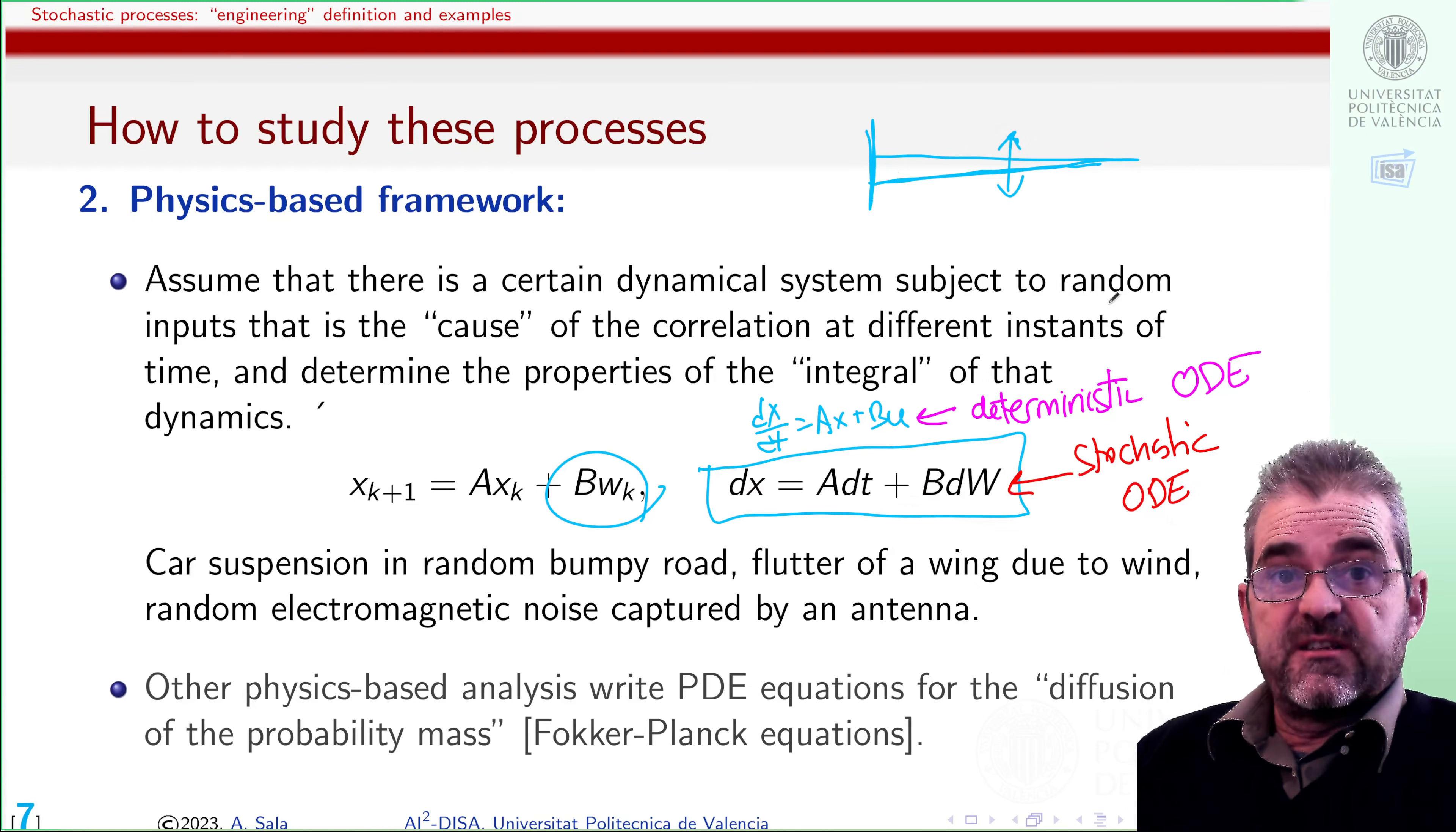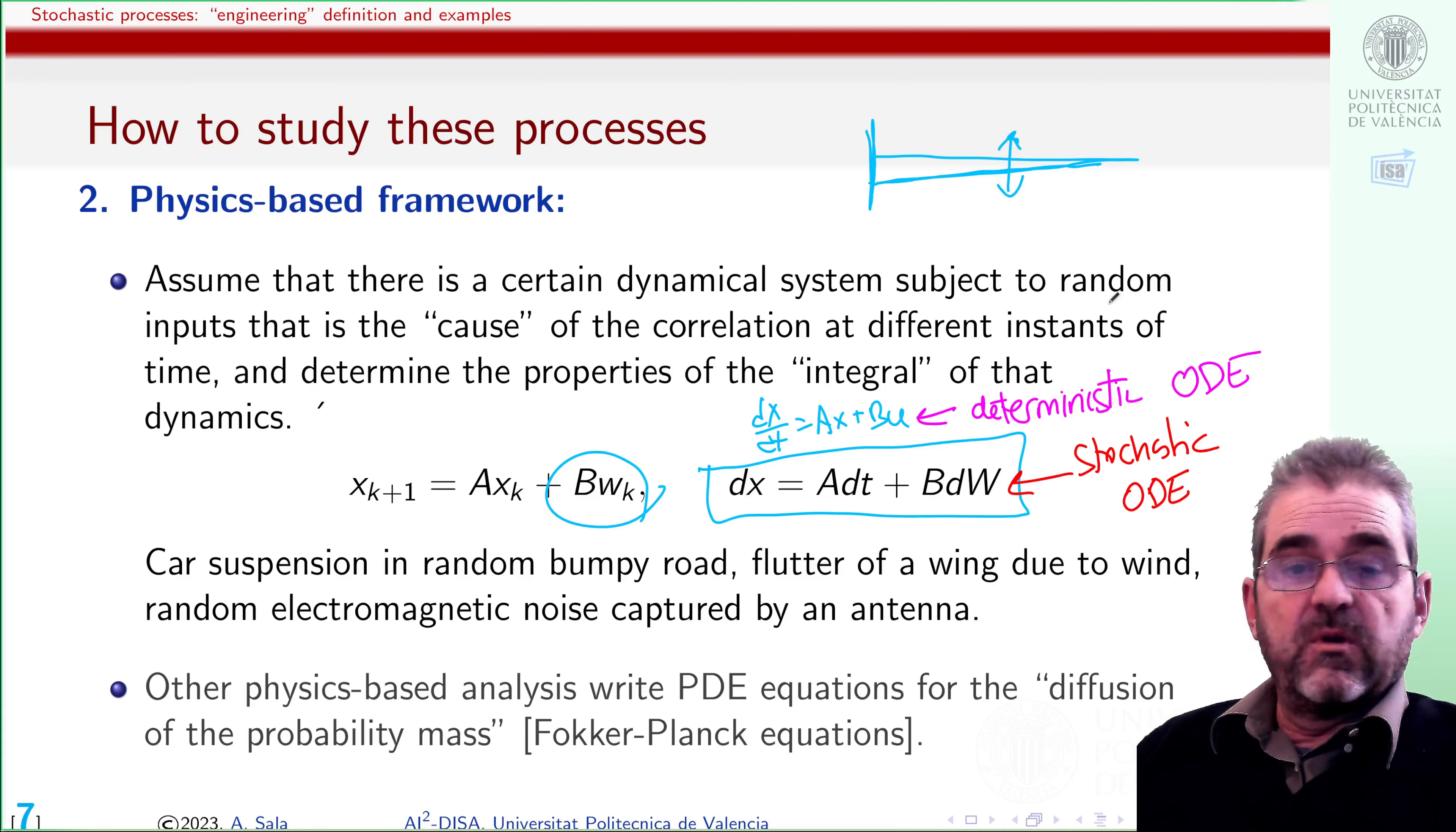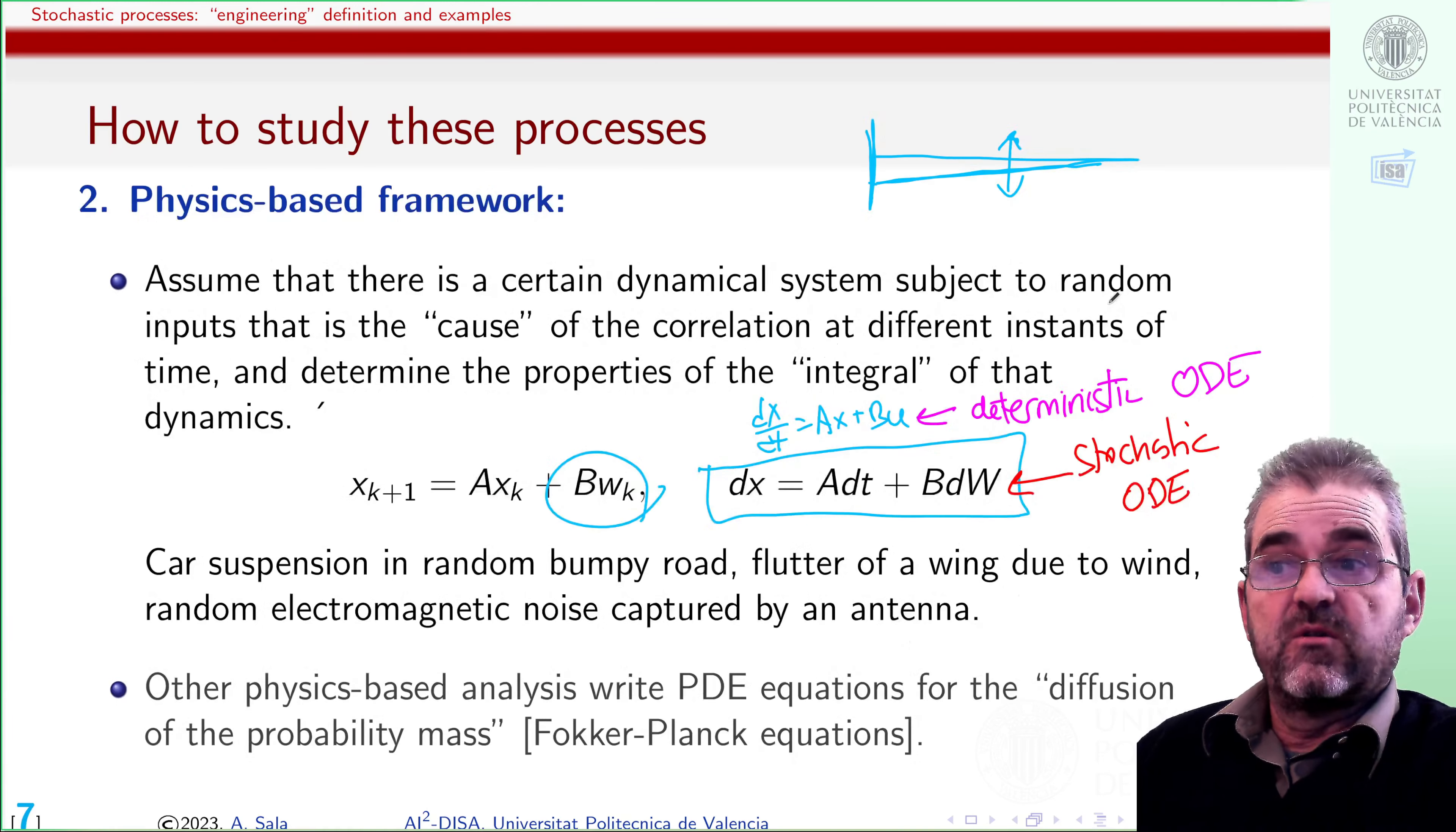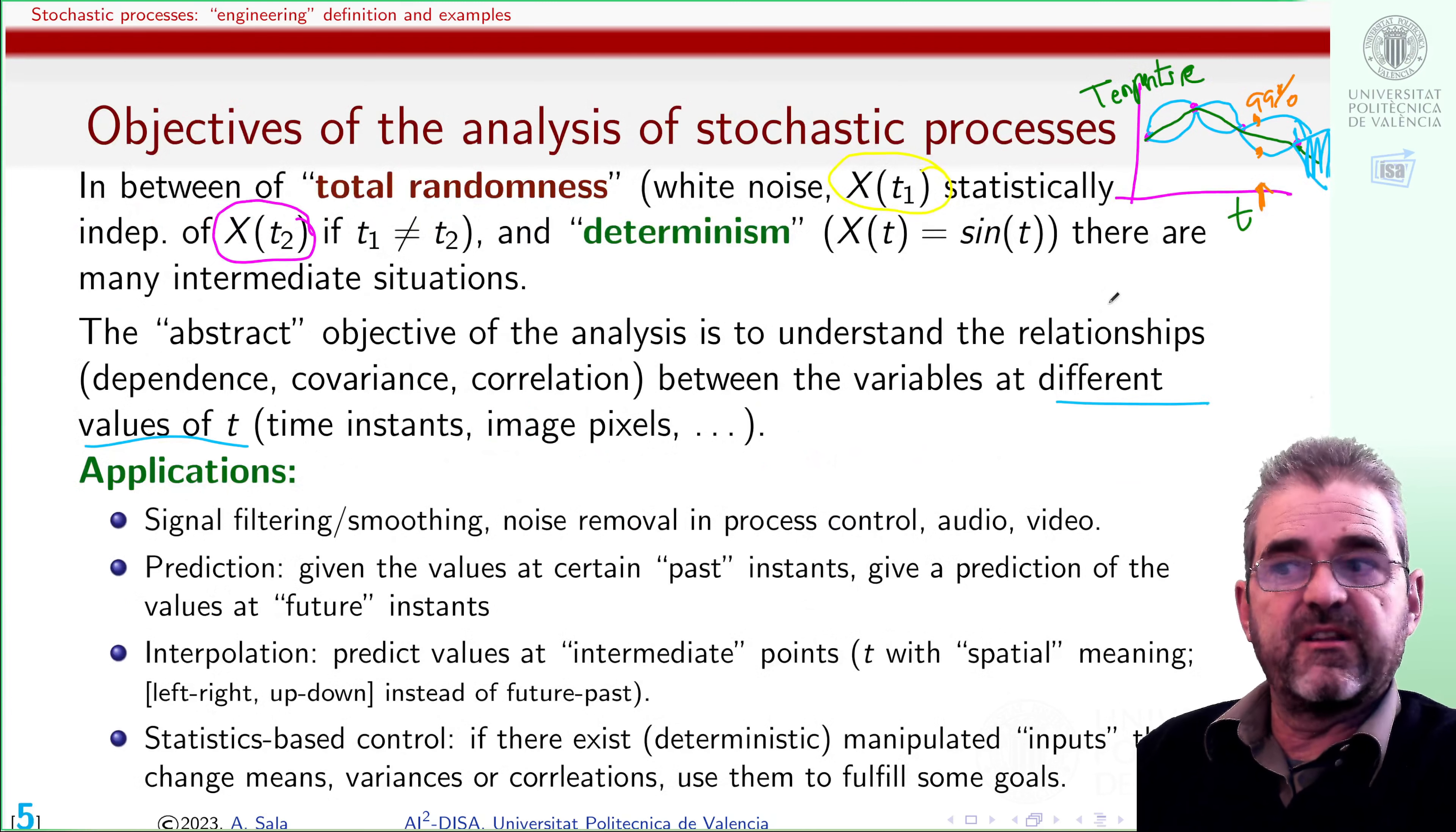I would study in this way, for instance, the vibrations of the wing of an airplane, or the vibrations of a car in a randomly bumpy road, or the random noise captured by an antenna, which is resonant at given frequencies. So I can get these covariances and means and stuff like that from data or from physical models. In both cases, the goal is the same, making some predictions, some smoothing, filtering, interpolation, or control.